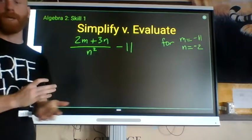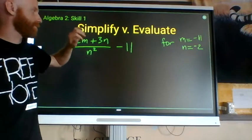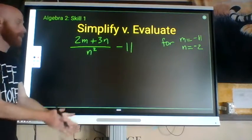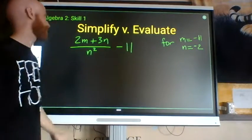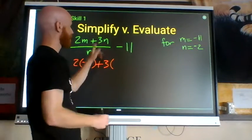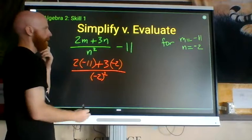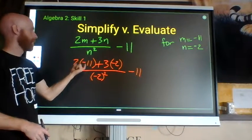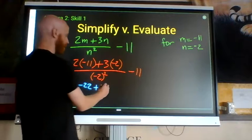One more example of evaluating expressions. Evaluate this expression for n equals negative 11 and m equals negative 2. First step: substitute — replace variables with what they actually equal. So: 2 times negative 11, plus 3 times negative 2, all over negative 2 squared, minus negative 11. Simplify the numerator: 2 times negative 11 is negative 22; plus 3 times negative 2 is negative 6.